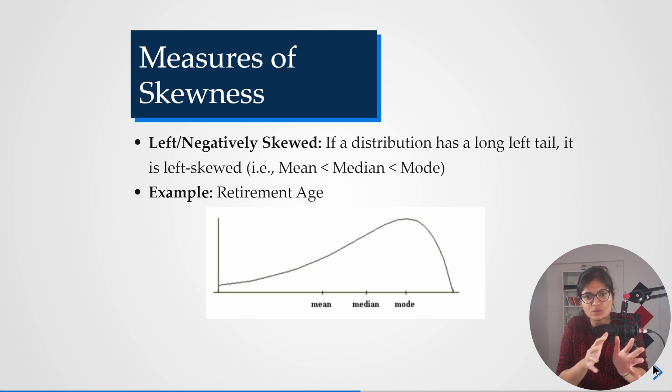Whenever I'm saying left skewed, I hope you can see this particular thing on the left side. Here you can see there is a long tail which is there, that's why it is called a left skewed distribution. Left side, there is a long tail.